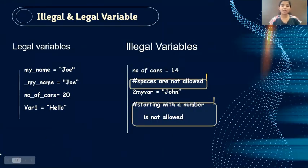Here are a few examples of legal variables and illegal variables. My name, my underscore name, no underscore of underscore cars, var, var1 - these are all legal variables. Whereas look at this side, number of cars. Why is this an illegal variable? Spaces are not allowed right? So it is breaking our rule so this becomes an illegal variable.